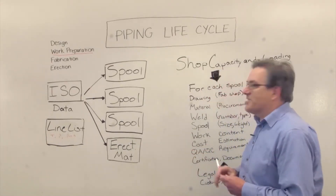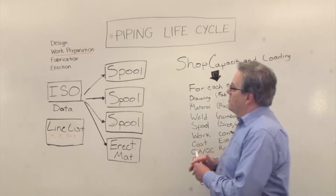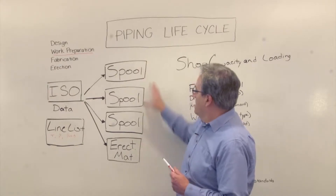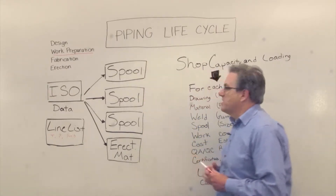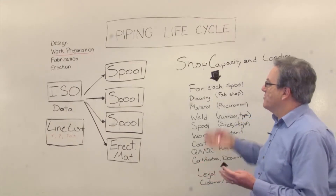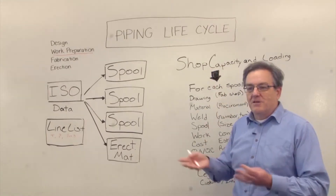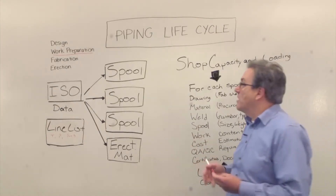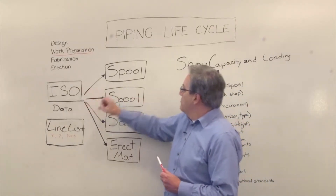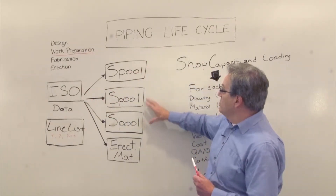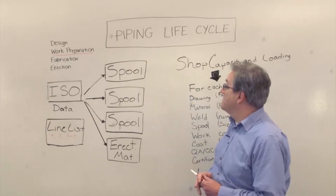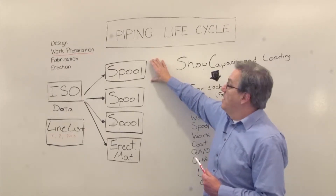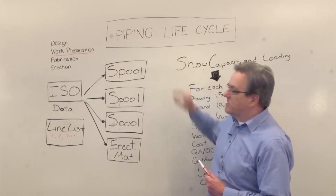The classical next step is to split up this ISO — this piping data — into a series of spools. A spool is basically the piece of pipe that you can manufacture in your pipe shop. There's no hard and fast rule, but it's something that maybe you can fit on the back of a truck. Typically a pipeline will be split down into a number of spools, maybe 5, maybe 10, depending on how big the pipeline is.